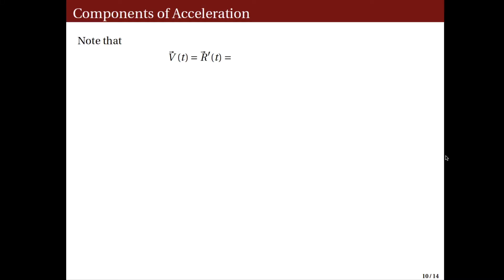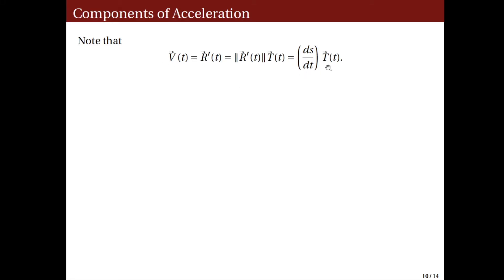Now we go back to the motion of an object moving in space. Note that the velocity of this object is the derivative of its position function, and r prime of t is a vector in the same direction as the unit tangent vector. In fact, it is the product of the scalar norm of r prime of t and the vector capital T of t. From the previous video, the norm of r prime of t is the speed, which is ds over dt. Hence, the velocity vector function equals ds over dt times the vector T of t, and is therefore in the same direction as the unit tangent vector.